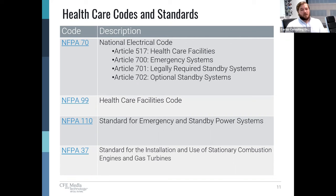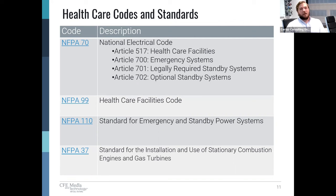NFPA 110 specifically deals with the generator system itself — installation and test requirements. This standard contains requirements covering the performance of emergency and standby power systems, providing an alternate source of electrical power to loads in buildings and facilities in the event that the primary power source fails. NFPA 37 establishes criteria for minimizing the hazards of fire during the installation and operation of stationary combustion engines and gas turbines.